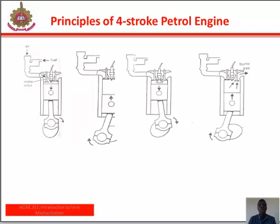The second stroke is called the compression stroke. Both the inlet and exhaust valves are closed. The piston is pushed upward by the connecting rod to compress the mixture of fuel and air in the combustion chamber or clearance volume, thus increasing the temperature of the mixture.